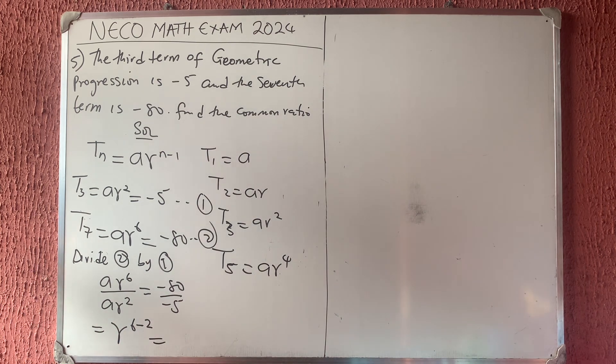It is equal to... now, 80 divided by 5 should give us... let me see, 80 by 5. I'm having 16. So 16.